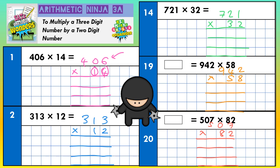On the top line, we're going to times everything by 4, in order: 4 sixes, 4 zeros, 4 fours. So 4 sixes are 24 — put the 4 in, carry the 2. 4 nothings are nothing, plus the 2 I've just carried, is 2. 4 fours are 16. Scribble out the 2 because we've already used that and we don't want to use it again by accident later on.